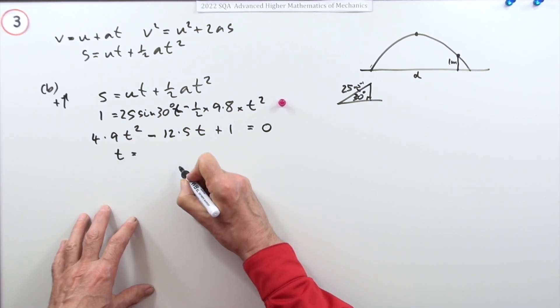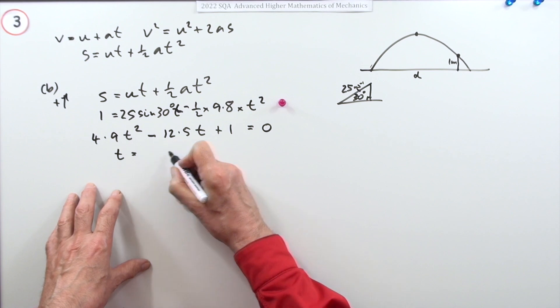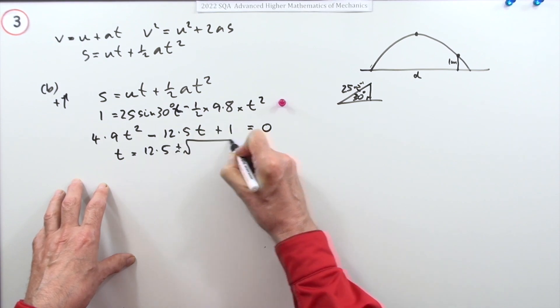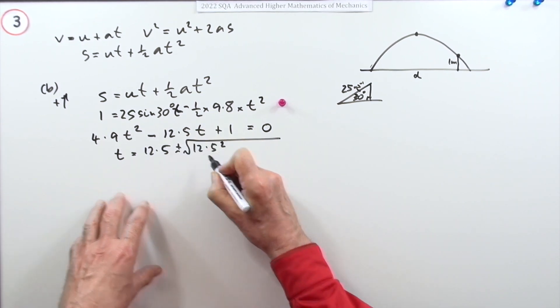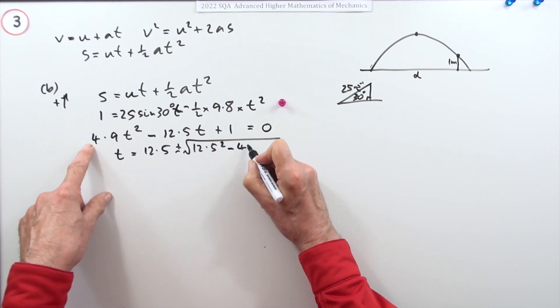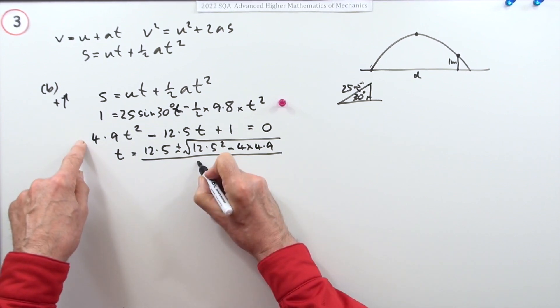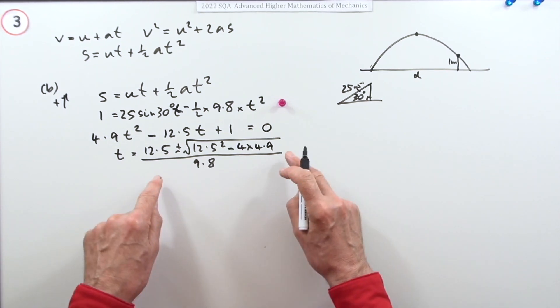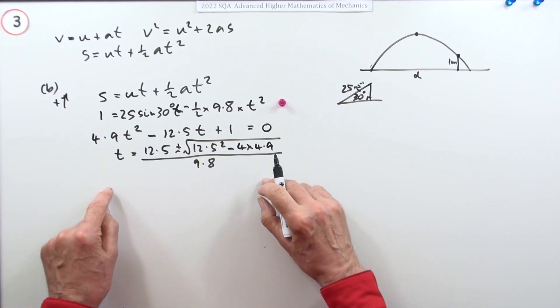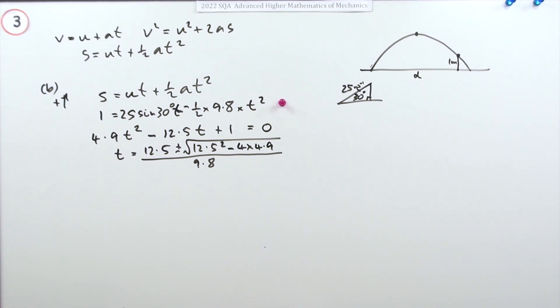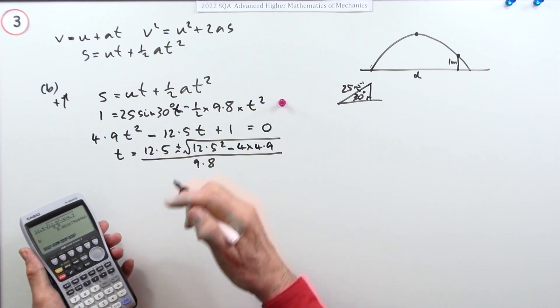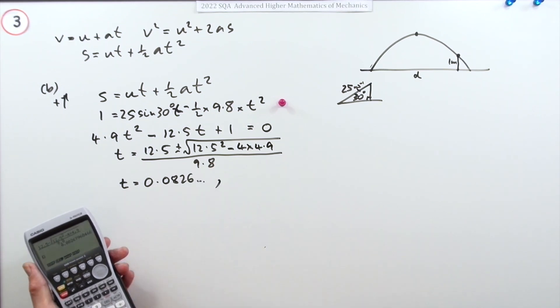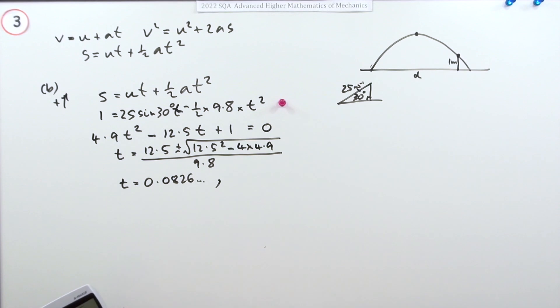The next mark doesn't come until you've solved this. Using the quadratic formula, t is negative b, that's 12.5, plus or minus the square root of b squared, 12.5 squared, minus 4 times that times that, all divided by 2 times that. You're just going to have to use your calculator. I've done it with a minus first, even though I know that's a bit of a waste of time. For that I get 0.0826 and so on, the first time it got to one meter.